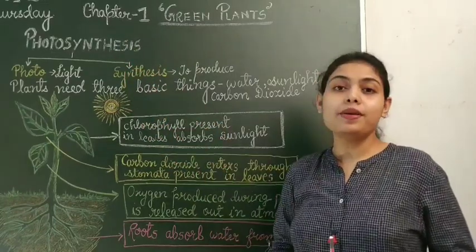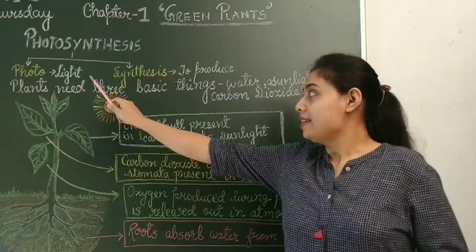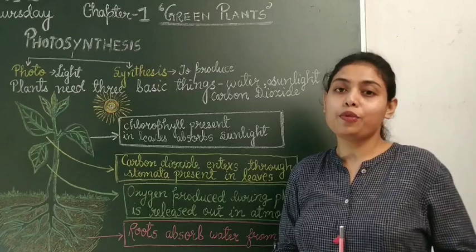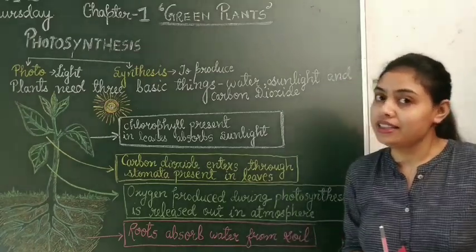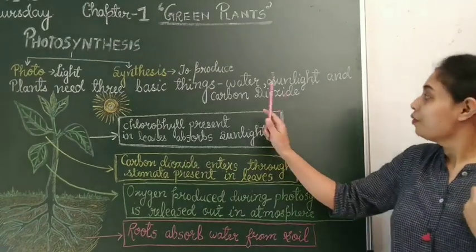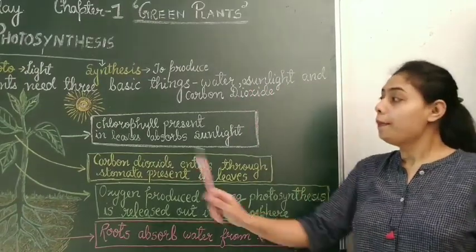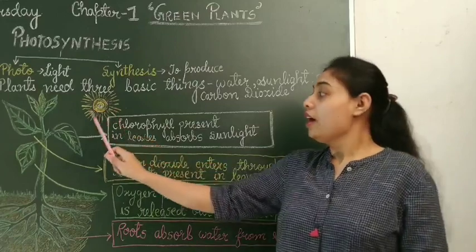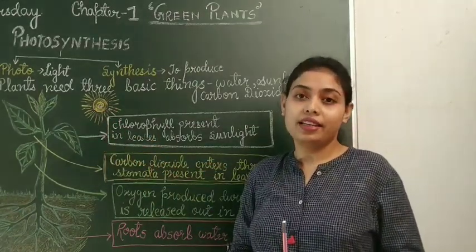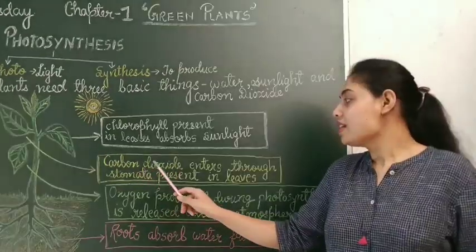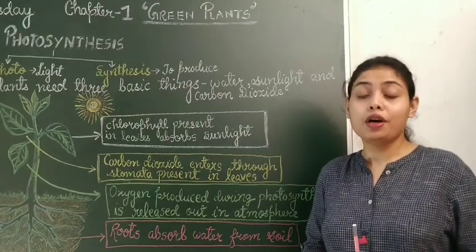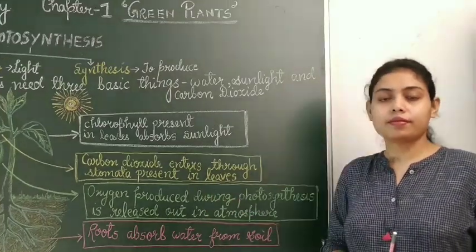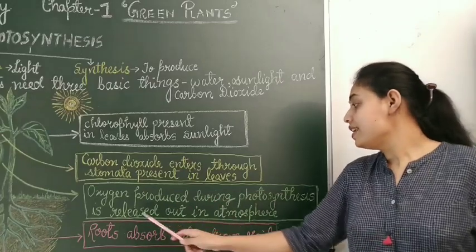The word photosynthesis can be separated into two smaller words: photo means light, and synthesis means to produce. Plants produce their food in the presence of sunlight, which is why the process is known as photosynthesis. Plants need three basic things: water, sunlight, and carbon dioxide. Plants absorb water through roots, chlorophyll in leaves absorbs sunlight, and carbon dioxide — a gas present in the atmosphere — is absorbed through stomata. Oxygen produced during photosynthesis is released out into the atmosphere.